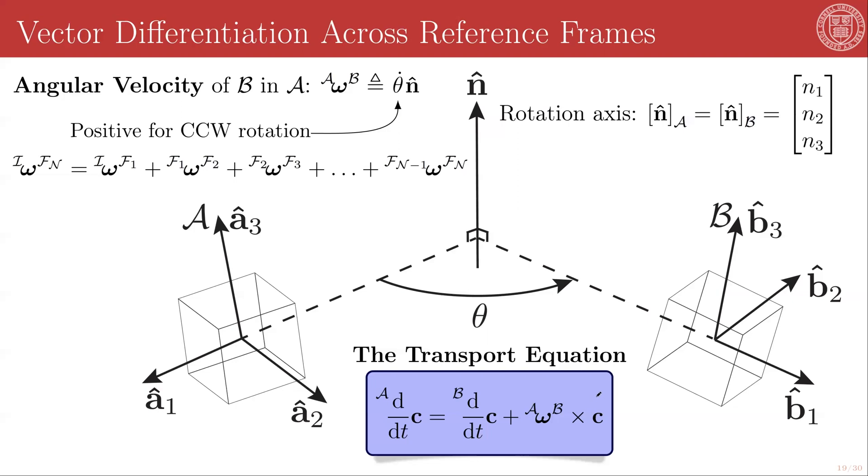So this is really key and really fundamental. And it is not physics, it is just the math associated with how we have set things up to describe these simple rotations. So this is our primary methodology for being able to differentiate across reference frames. And it is going to be hugely useful in our study of astrodynamics.